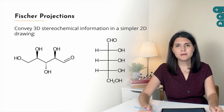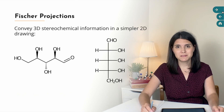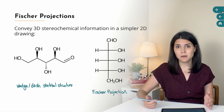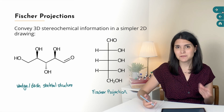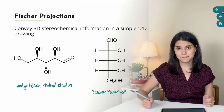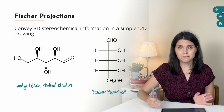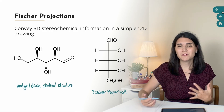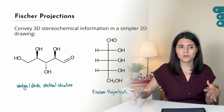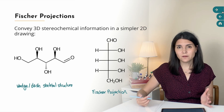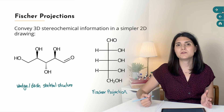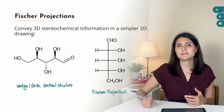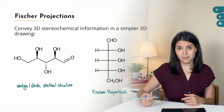Fischer projections are one of the many ways that chemists can use to draw or represent molecules. The Fischer representation is useful because it can convey three-dimensional stereochemistry information about the molecule in a simpler two-dimensional flat drawing without the need to draw wedges and dashes. So if you think about molecules like carbohydrates, which can have many chirality centers and a long chain, Fischer projections are a much more straightforward way to get that information across quickly.